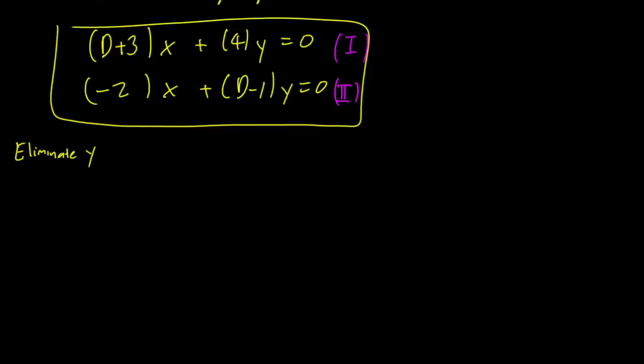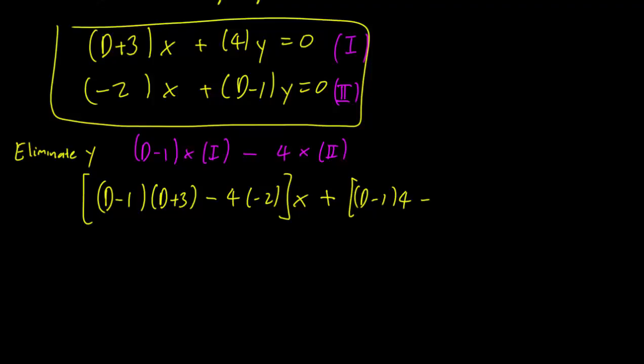We can do that by multiplying and subtracting the two equations. To eliminate y, we can write down (D-1) times the first equation minus 4 times the second equation. And what that gives us is (D-1)(D+3) - 4(-2) of x plus (D-1)(4) - 4(D-1) times y equals 0. And of course, this term cancels out. So this is just 0 and we have successfully eliminated y.